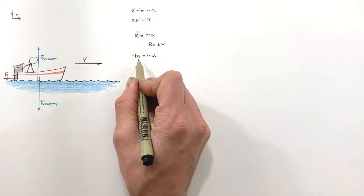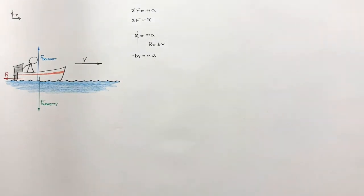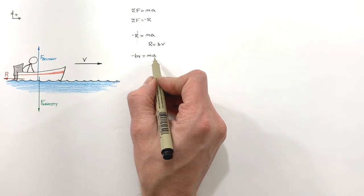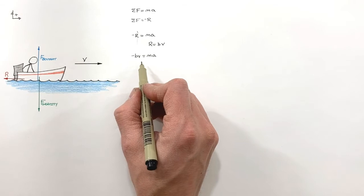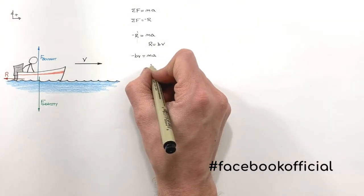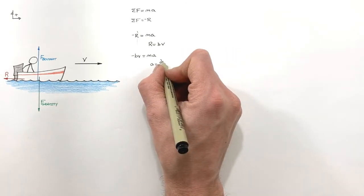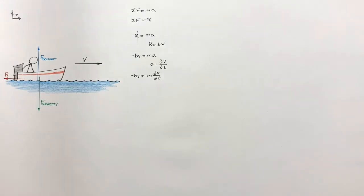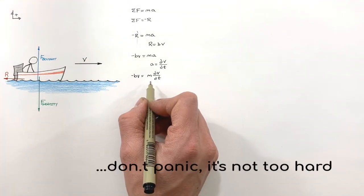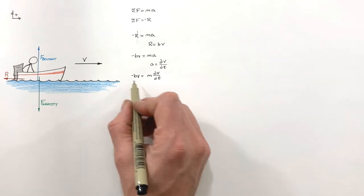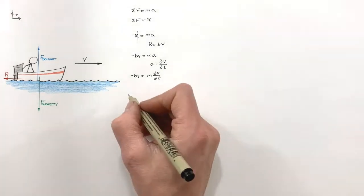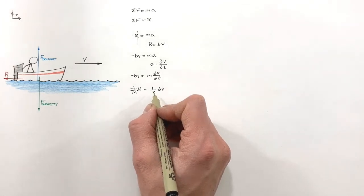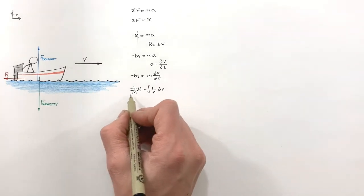Substituting R = bv into Newton's second law gives us a relationship between the boat's velocity and its acceleration. We have velocity and acceleration, but no time yet. Remembering that acceleration equals dv/dt and substituting this in, we now set up a differential equation. To solve for velocity as a function of time, we separate out our variables v and t.